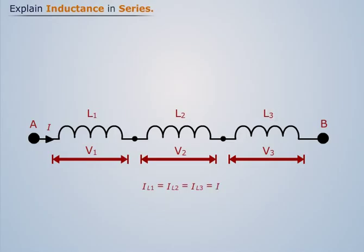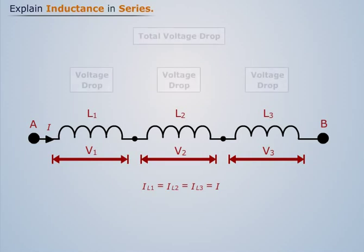The definitive measure of inductance is the amount of voltage dropped across an inductor for a given rate of current change through it.